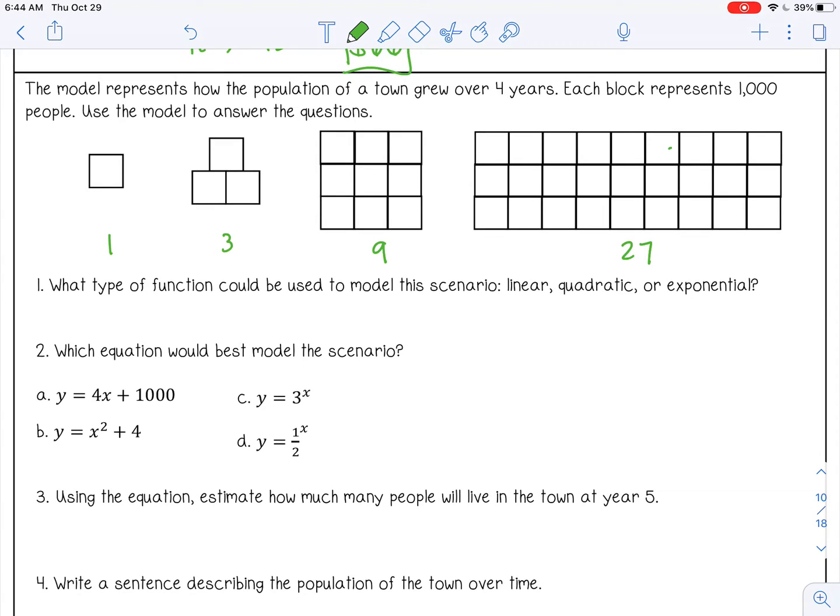So what type of function can be used to model this scenario? Well, it looks like I'm growing exponentially. It's definitely not linear because I'm not growing at the same rate. And if you wanted to make a table to help you, we have three different examples here. 1, 3, 9, 27. So from 1 to 3, that's 2. From 3 to 9, that's 6. Definitely not linear. From 9 to 27, that's 18. But you could also check for quadratic. So from 2 to 6 is 4. From 6 to 18 is 12. So it's not quadratic. But it is exponential. 27 over 9 is 3. 9 over 3 is 3. And then 3 over 1 is 3. So that's how you could prove it.